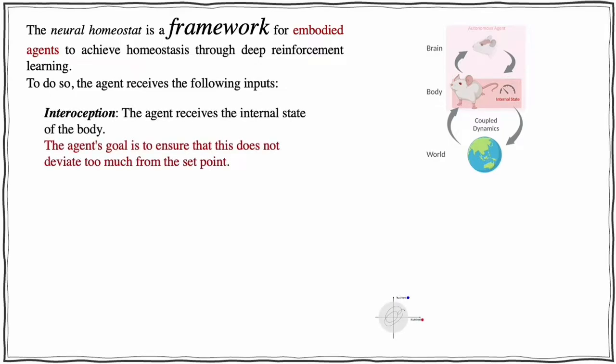Interoception: the agent receives the internal state of the body. The agent's goal is to ensure that this does not deviate too much from the set point.